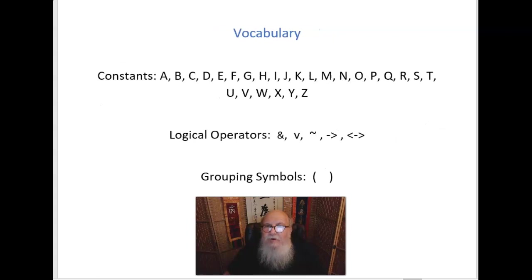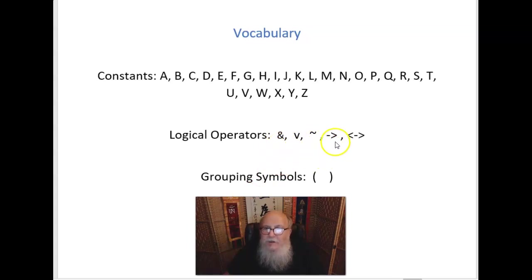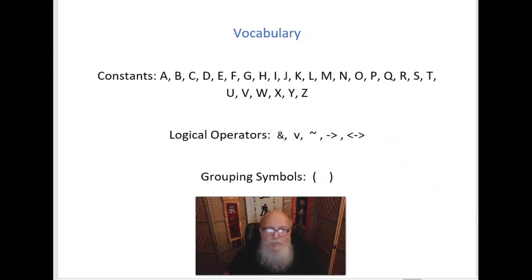The only vocabulary allowed in our language is the following. We have constants, which are capital letters — any capital letter in the alphabet. We have logical operators: 'and,' 'or,' 'not,' 'if...then,' and 'if and only if.' And we have grouping symbols: left parentheses and right parentheses.